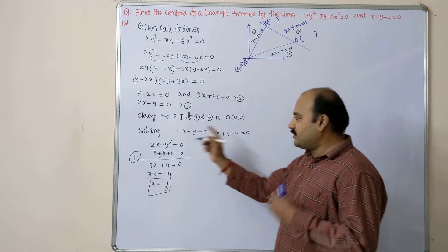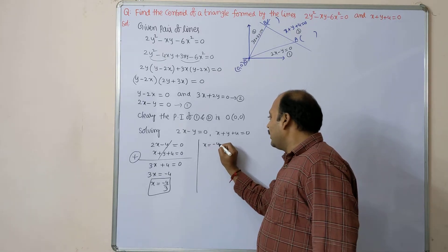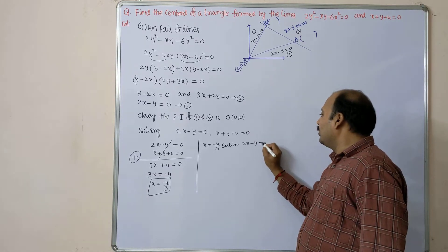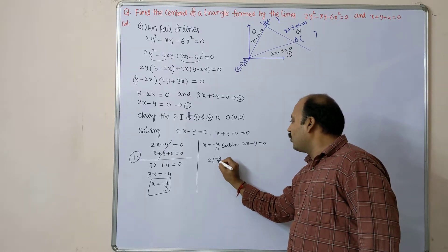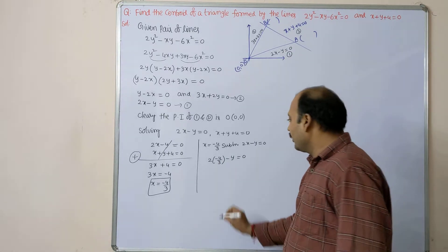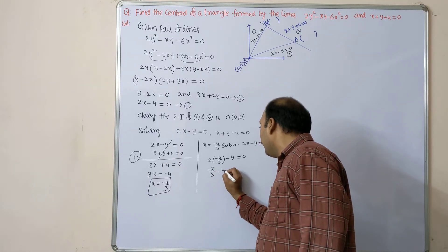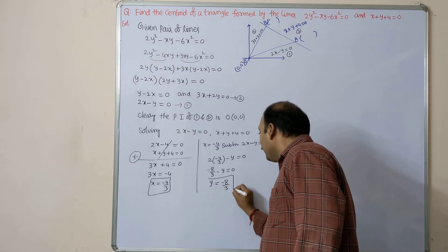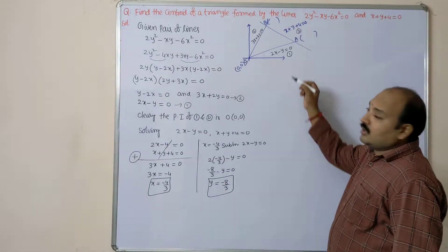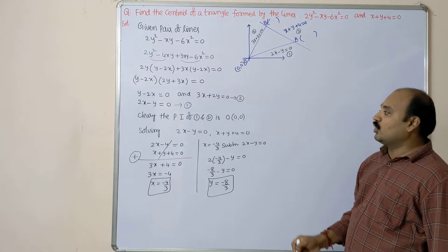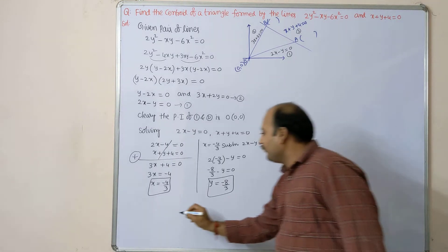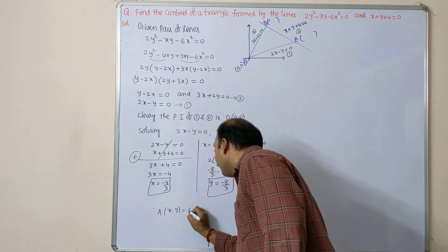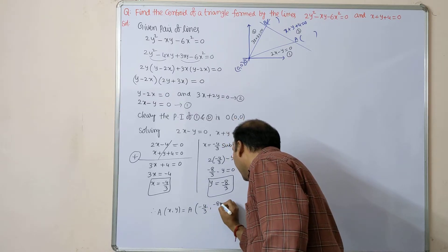Substituting x = -4/3 into 2x - y = 0: 2(-4/3) - y = 0, so -8/3 - y = 0, therefore y = -8/3. So solving equations 1 and 3, we get point A = (-4/3, -8/3).